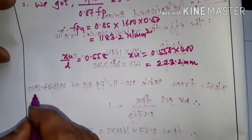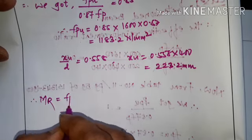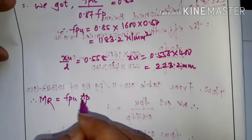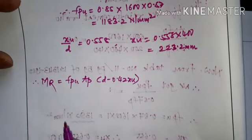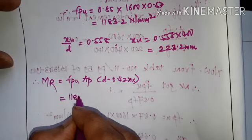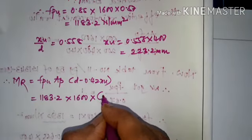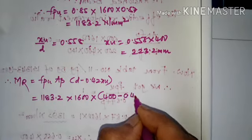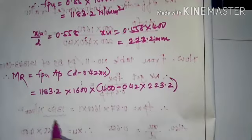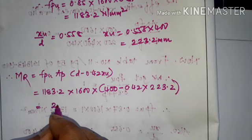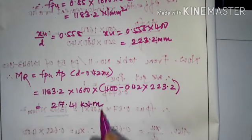Substituting into the formula: MR = FPU × AP × (D − 0.42 × XU) = 1183.2 × 600 × (400 − 0.42 × 223.2) = 217.41 kN·m.